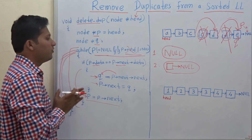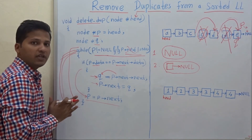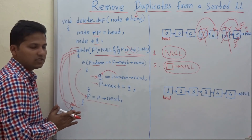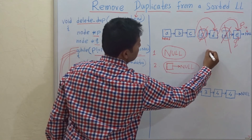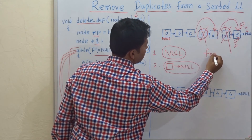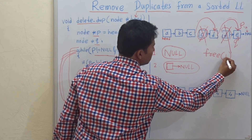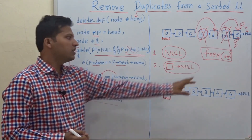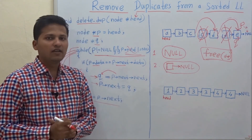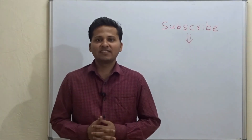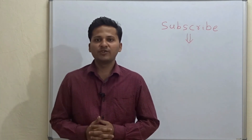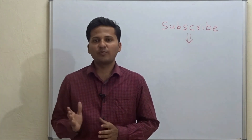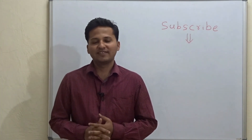This is the way we find and remove duplicates from a sorted linked list. If you want to actually free the memory, you can use the function free() to free the memory of the duplicated node. Please subscribe to my channel as I post algorithm videos every day, and if you want a video on any particular topic please mention it in the comments below. Thank you.